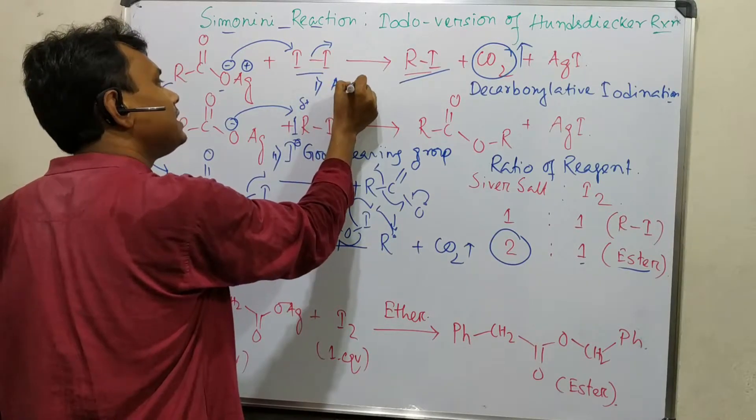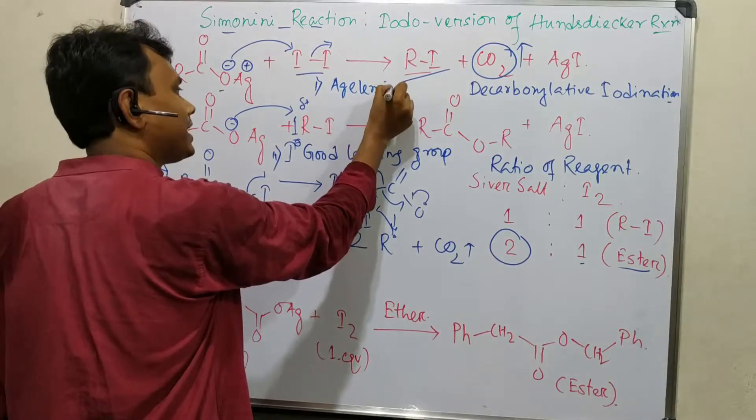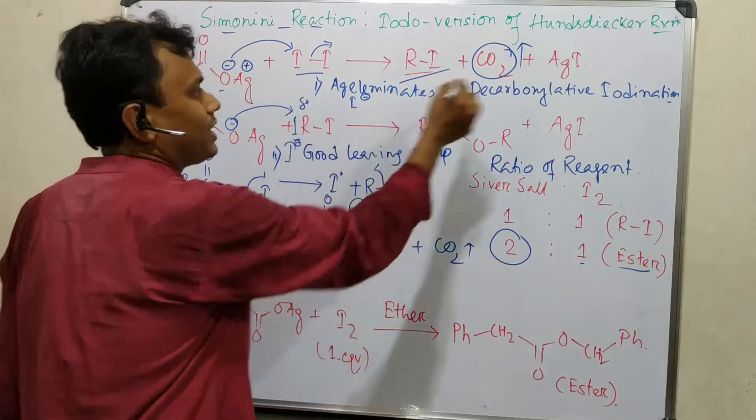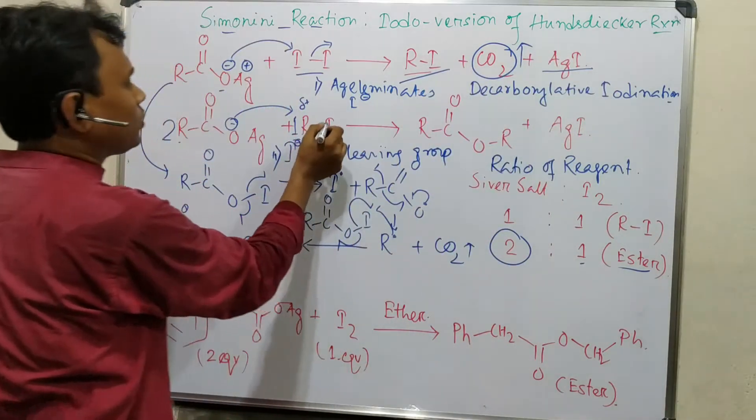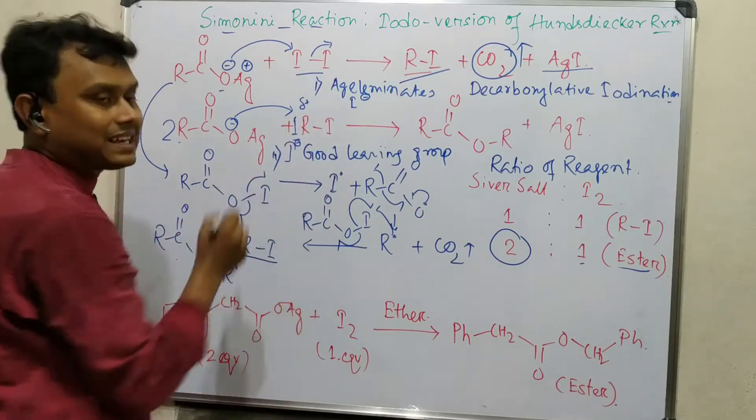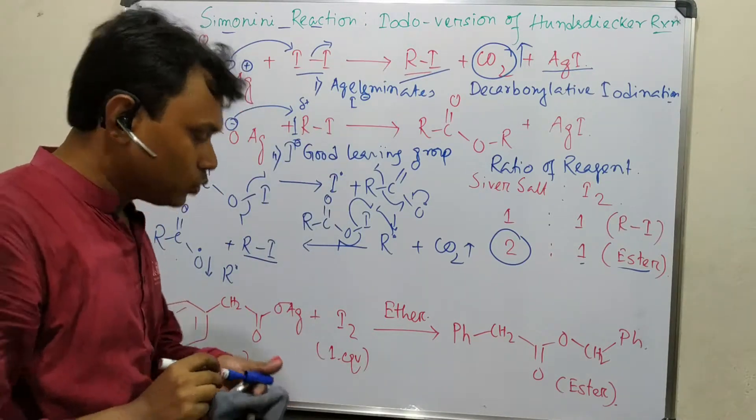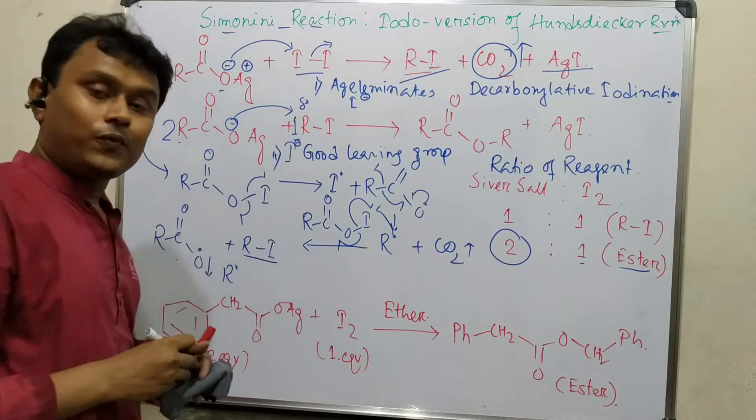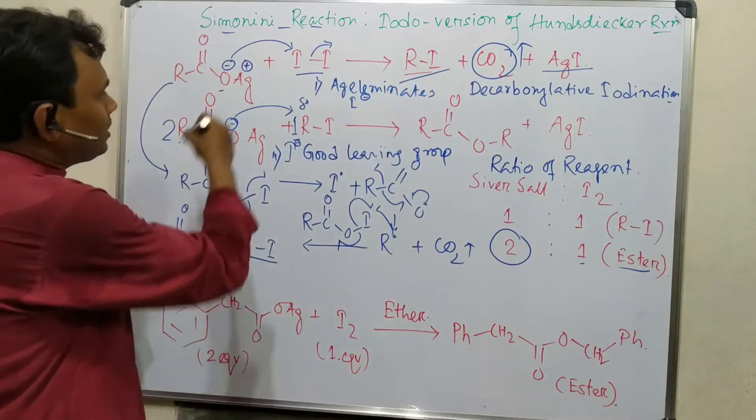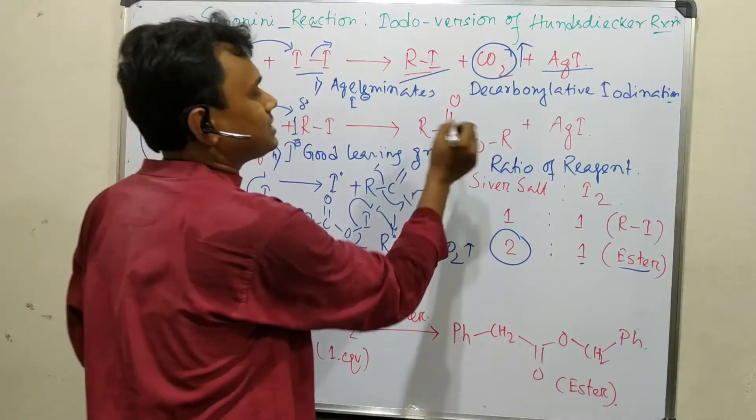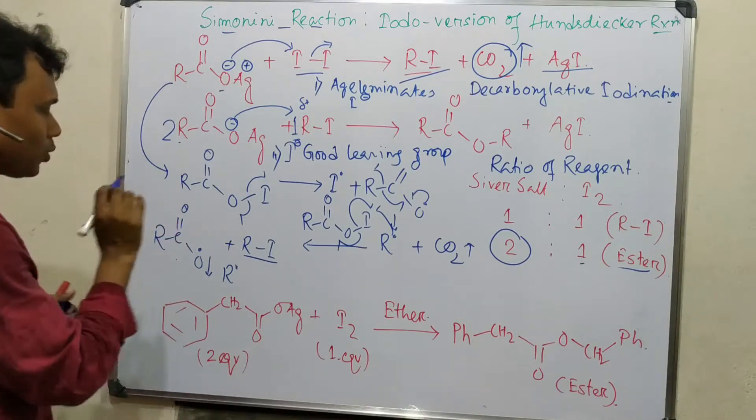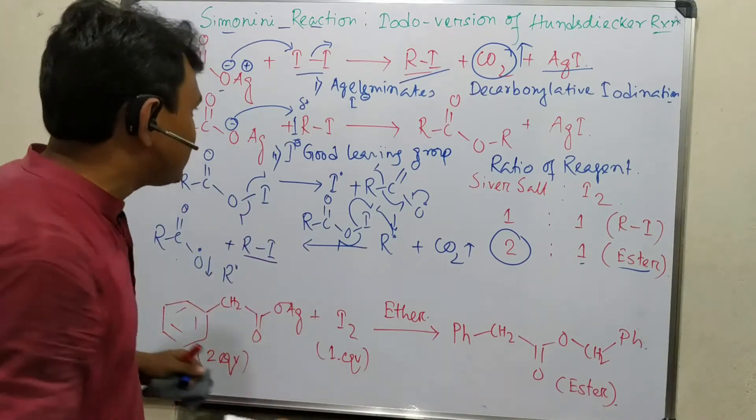After silver eliminates iodide, the alkyl group becomes charged and the carboxylate attacks. Carboxylate is not that good of a nucleophile, but this silver salt is activating it for the attack. Ultimately, this ester forms. So this is the way to prepare carboxylic esters.